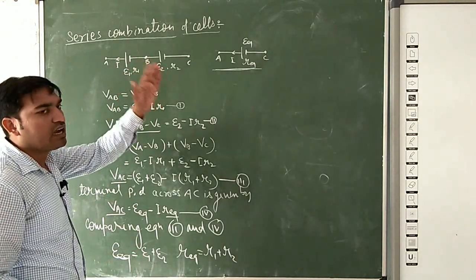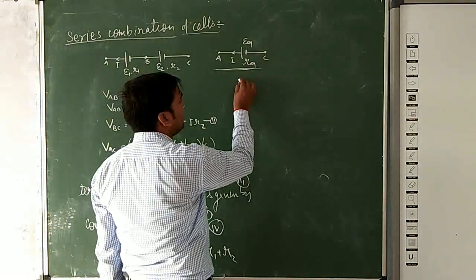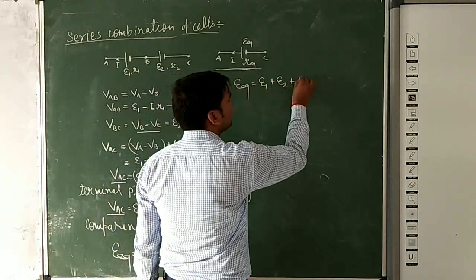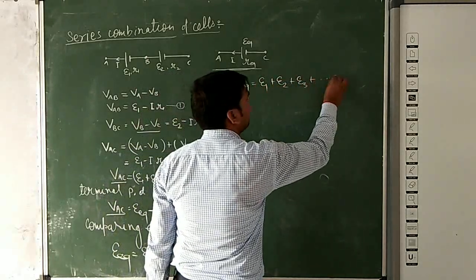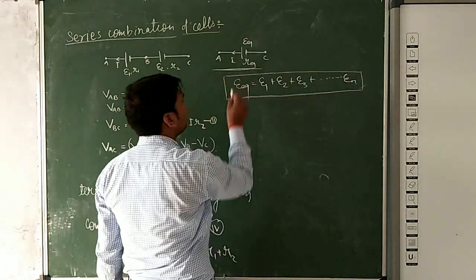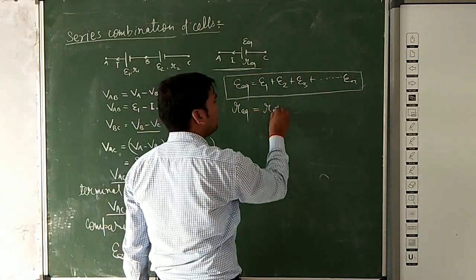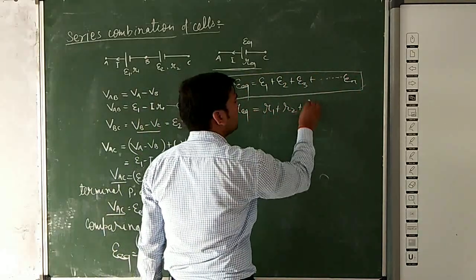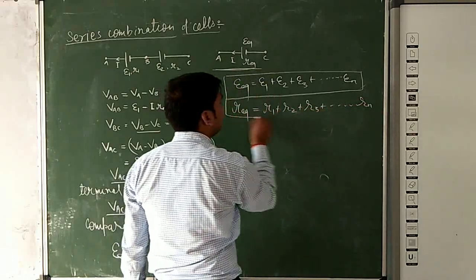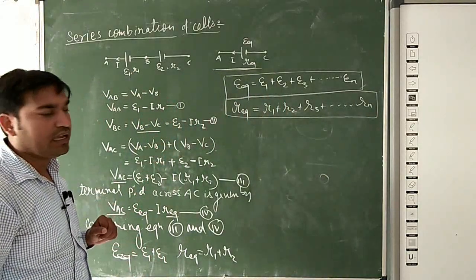In a similar way, if instead of two cells we have 3, 4, 5, 6, or N cells, then E_equivalent equals E1 plus E2 plus E3 and so on up to E_N. And R_equivalent equals R1 plus R2 plus R3 and so on up to R_N.